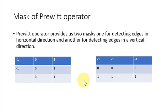The Prewitt operator provides us two masks: one for detecting edges in the horizontal direction and another for detecting edges in the vertical direction. When we apply the first mask on the image, it detects prominent vertical edges. It works like a first-order derivative and calculates the difference of pixel intensity in the edge region. As the center column is zero, it does not include the original value of the image but rather calculates the difference of the right and left pixel values around the edge. This increases the edge intensity and it becomes enhanced compared to the original image.